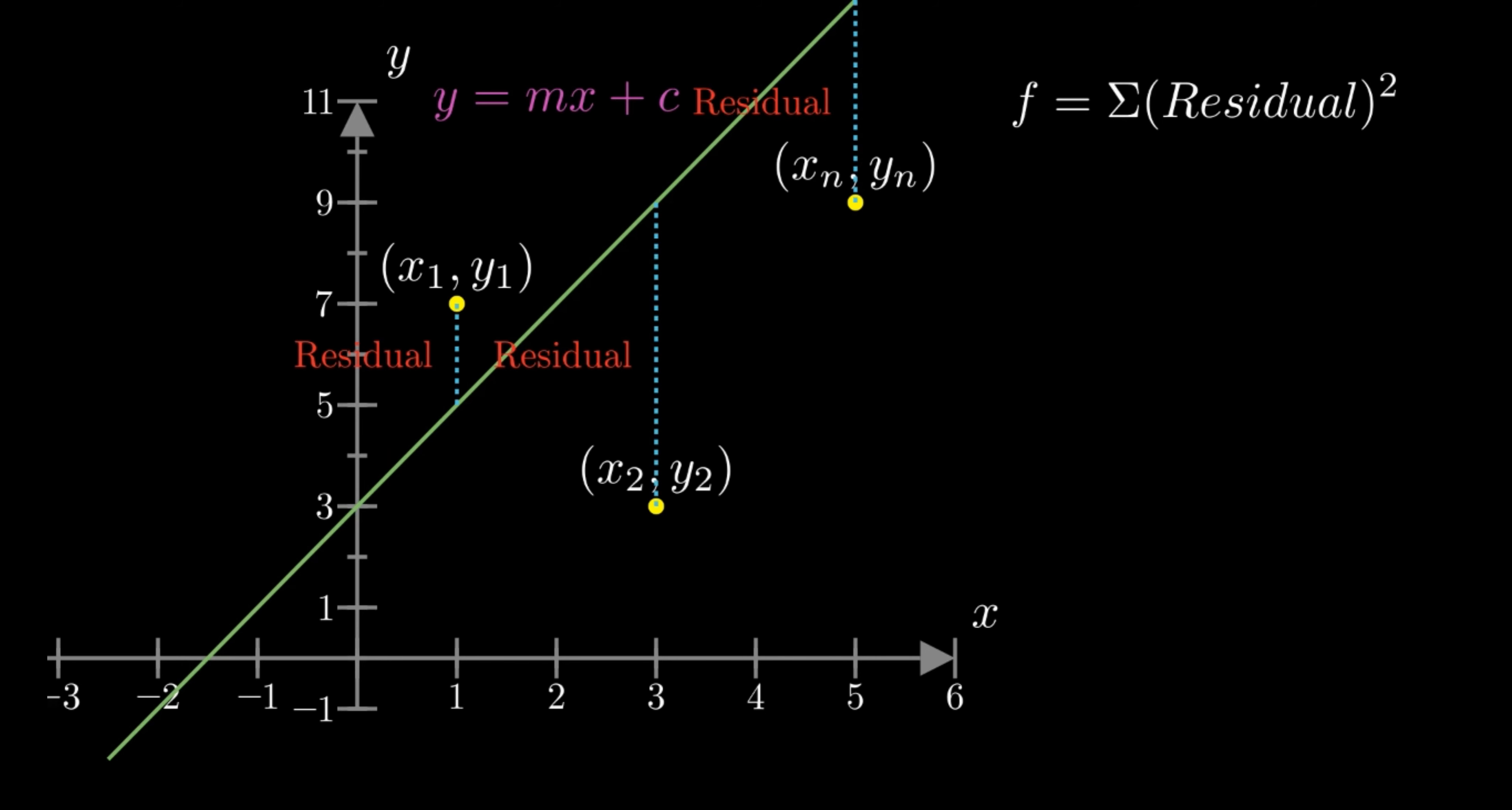Then in that particular setting, the function will be equal to the summation of y minus yi squared, where y is the predicted value while yi is the actual value. Since we know that our prediction comes from this function on the screen, y equals mxi plus c, it does not hurt to replace y by mxi plus c where xi is the actual value of the data.